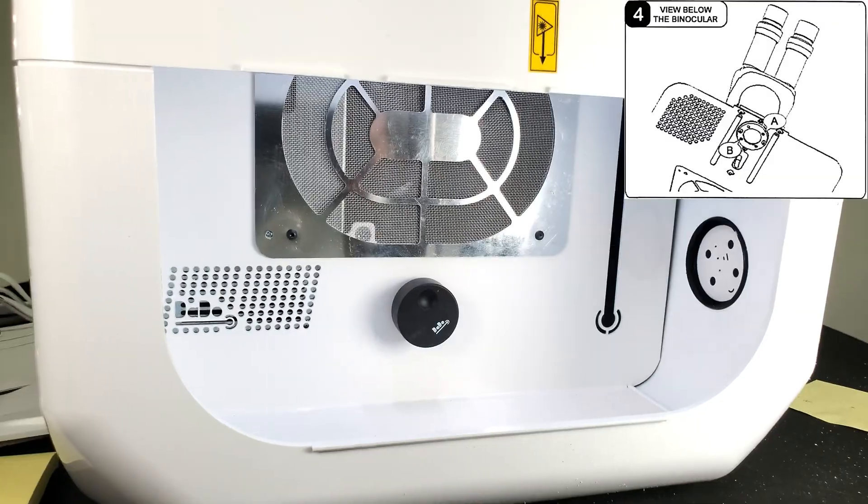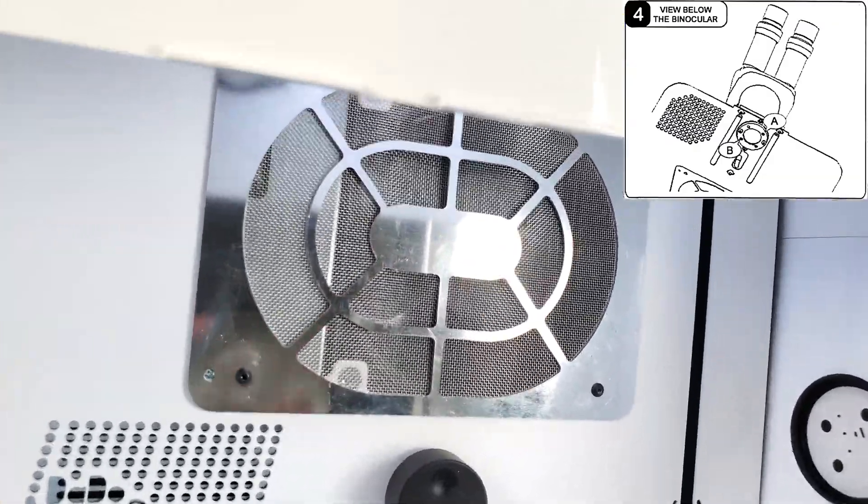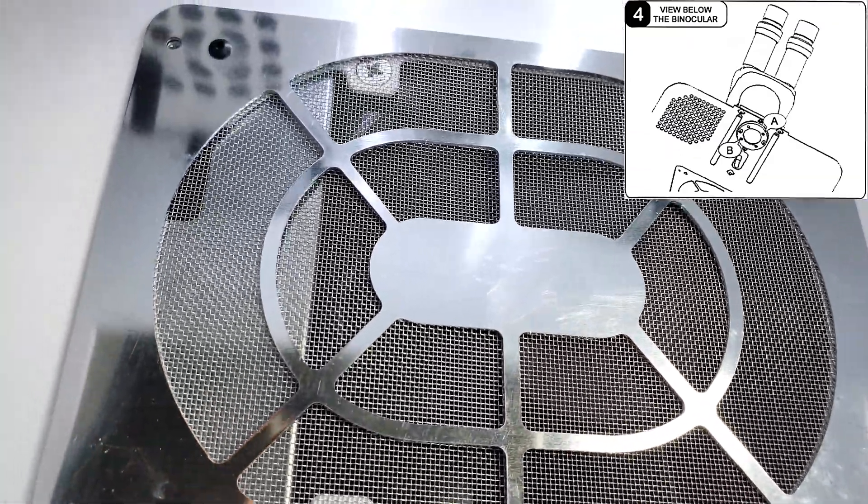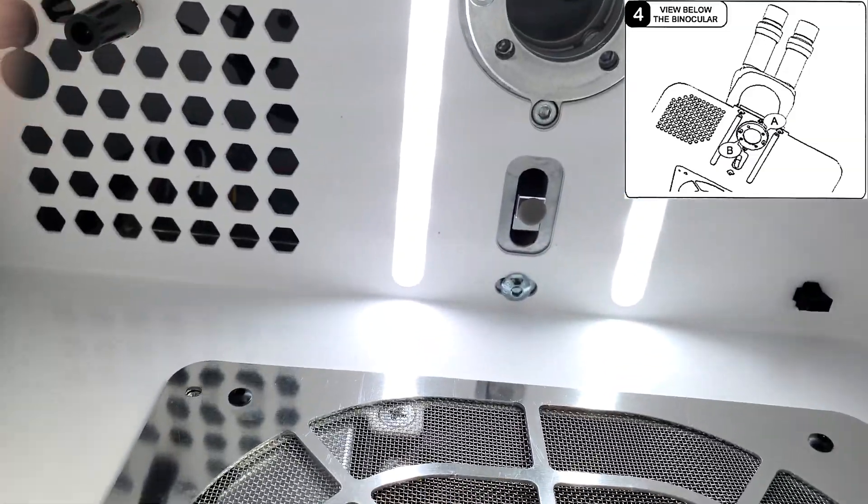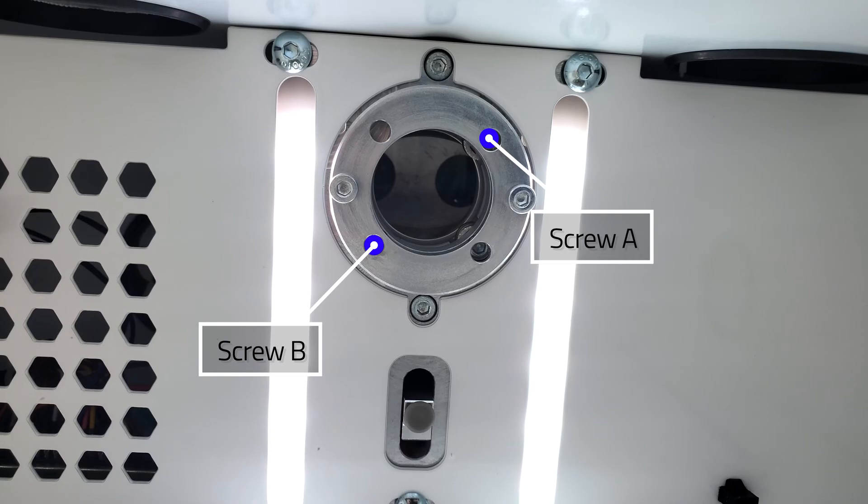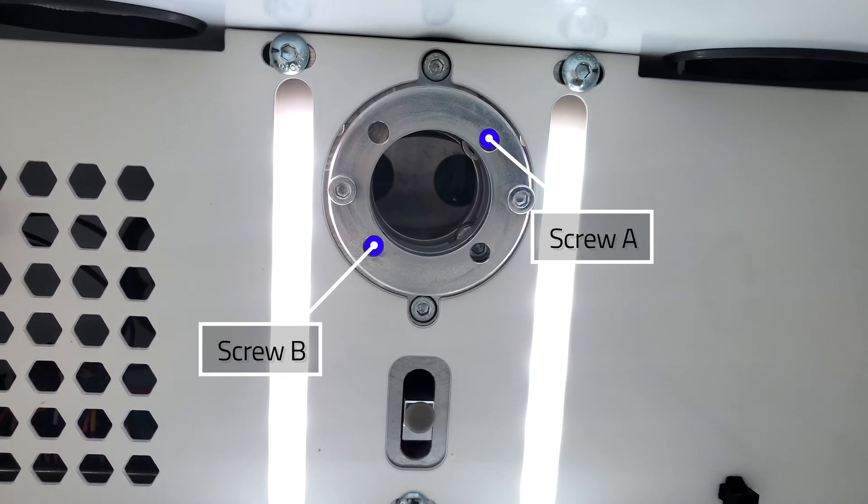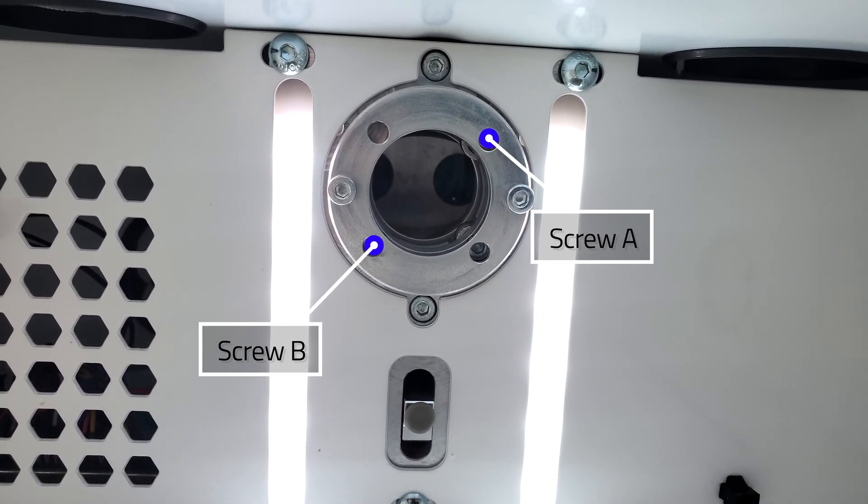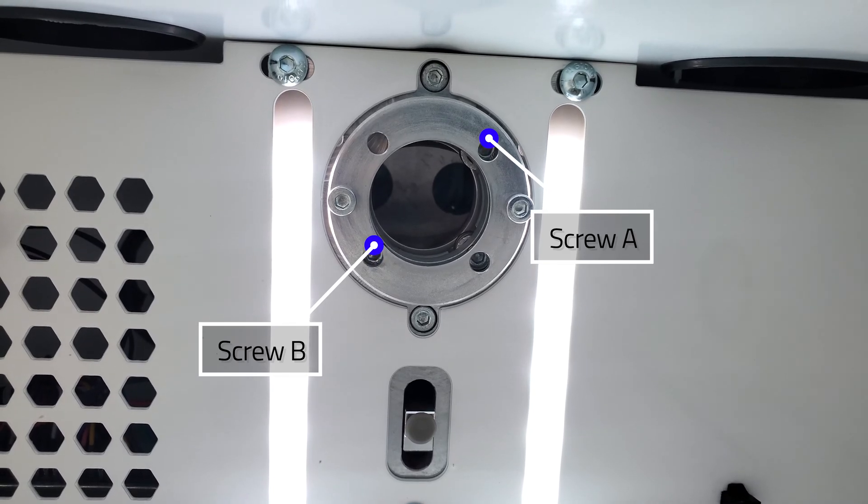Now as we look at step four we're going to enter the weld chamber looking up towards the roof of the chamber and we're going to see screw A and screw B as it's oriented. Screw A is going to be in charge of our up and down movement and screw B is going to be in charge of our left and right movement.